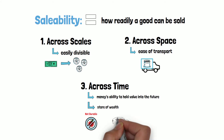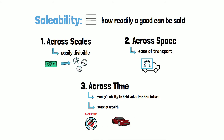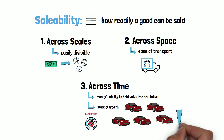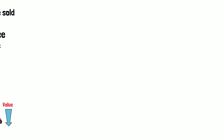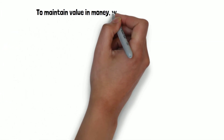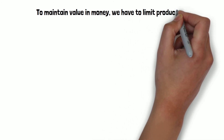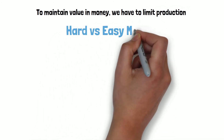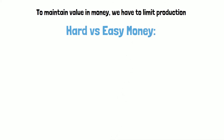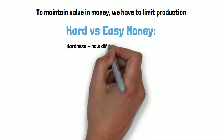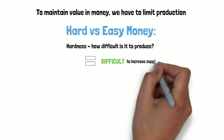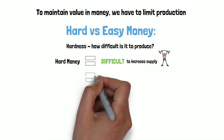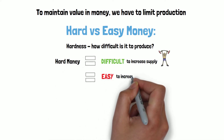To maintain value, the supply of the good has to stabilize or preferably remain low. Imagine if everyone in the world got a Ferrari tomorrow — the value of Ferraris would go down. This means that in order to maintain value in money, we have to limit production to keep supply down. For something to assume a monetary role, it has to be costly to produce. And so this leads us to hard versus easy money. Hardness of money is how difficult it is to produce. If it's difficult to increase a money supply, that is hard money; if it's easy, that is easy money.